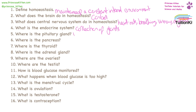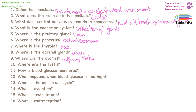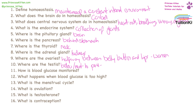The pituitary gland is located in the brain. The pancreas is behind the stomach. The thyroid gland is in your neck. The adrenal glands are by your kidneys. Your ovaries are halfway between your belly button and hips, and that is in women only. Testes hang below the penis, and that is in men only.